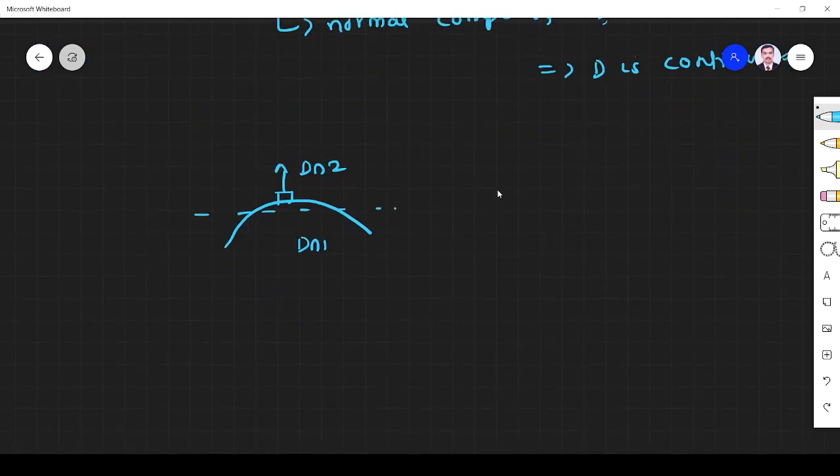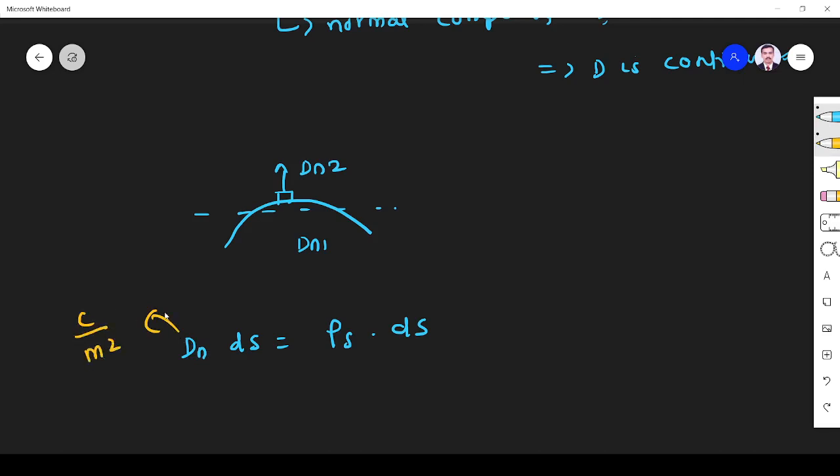From this, we understand we have dN normal component given by dN ds equals rho s into ds. If you have any doubt how this formula has come, we know that d electric flux density is given by coulomb per meter square. ds is area meter squared.